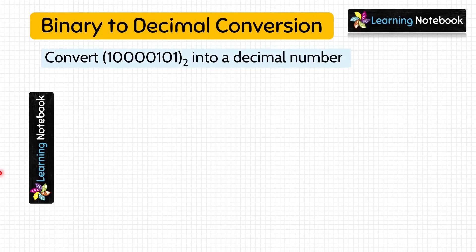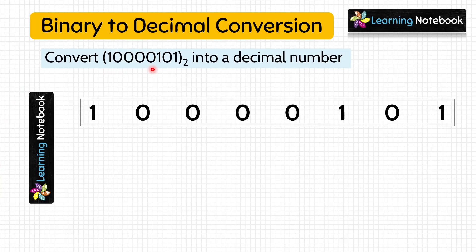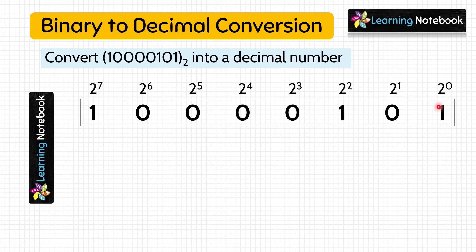Let's move to the next question. This time we have to convert another binary number into a decimal number. Following the 3 steps, we first write down the place values of all the digits: 2⁰, 2¹, 2², and so on up to 2⁷. We now have the place values of all the digits.